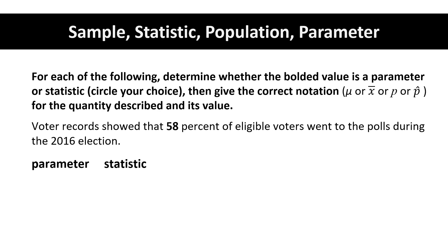The 58% of voters is a proportion, it is describing the population, so this is a parameter. And the symbol for the population proportion is p, so we say p is equal to 58%.